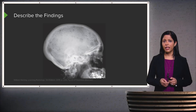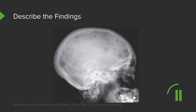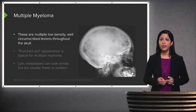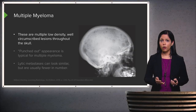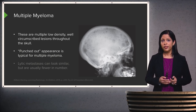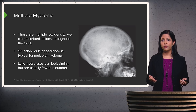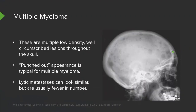Let's take a look at this lateral view of the skull. This is an example of multiple myeloma. You have multiple low-density, well-circumscribed lesions throughout the skull — a very typical appearance called the punched-out appearance. Lytic metastases can look very similar but are usually fewer in number. You can see multiple lucent lesions of all different sizes scattered throughout the skull.